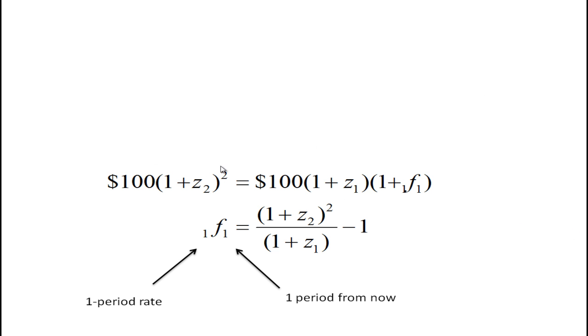And if we do that here we have the equation. This is the investment in the one-year instrument. You're going to get this interest rate z2 for two periods. So you're going to get a compound return of 100 times one plus z2 squared and you're going to set that equal to the investment in the two instruments. Here you're going to invest your hundred dollars.